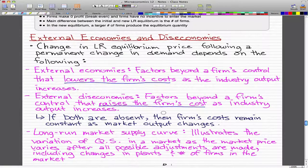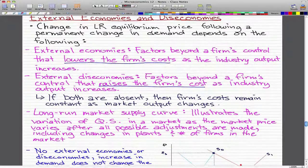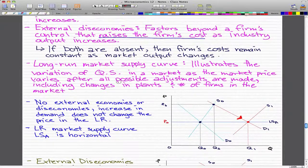Now, if both are absent, the firm's cost will remain constant as market output changes. The long-run market supply curve illustrates the variation of quantity supplied in market as the market price varies after all possible adjustments are made, including changes in plants and the number of firms in the market.